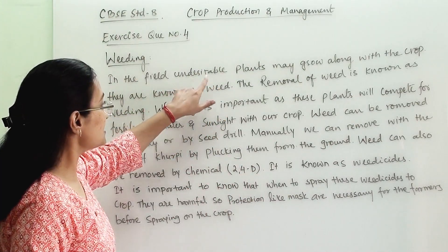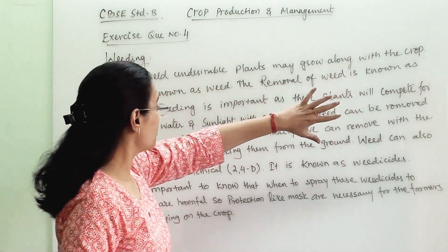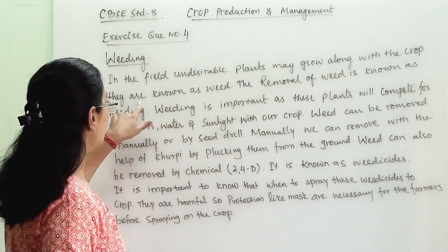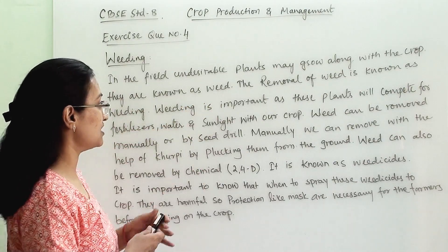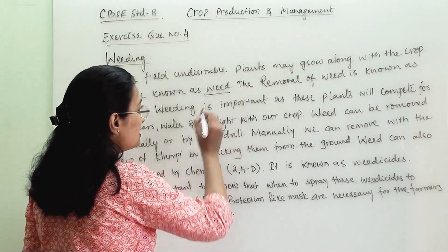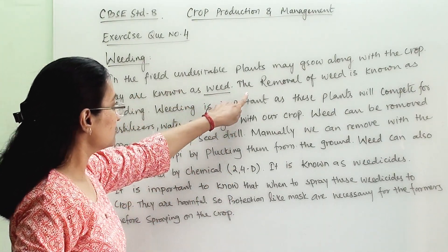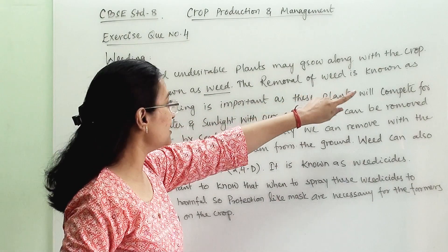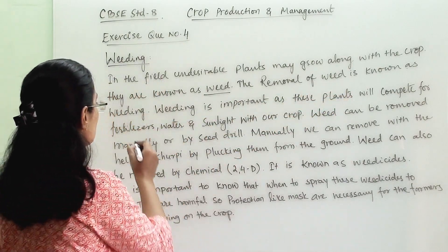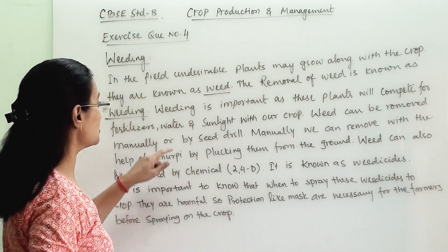In the field, undesirable plants may grow along with the crop — they are known as weeds. So first we are writing what is a weed, and then what is weeding. The removal of weeds is known as weeding. This is the definition.